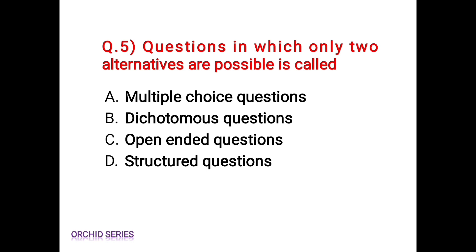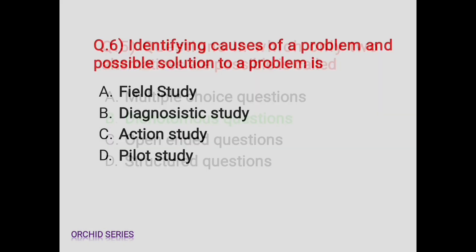Question number 5: questions in which only two alternatives are possible are called — Option A: multiple choice questions, Option B: dichotomous questions, Option C: open ended questions, Option D: structured questions. Multiple choice questions have more than two options, so Option A is wrong. Therefore Option B, dichotomous questions, is the correct answer, since 'di' means two — questions in which only two alternatives are possible are called dichotomous questions.